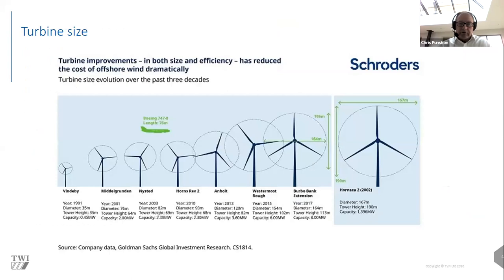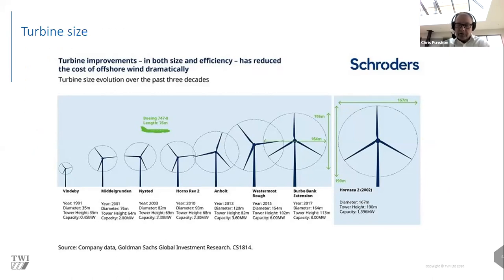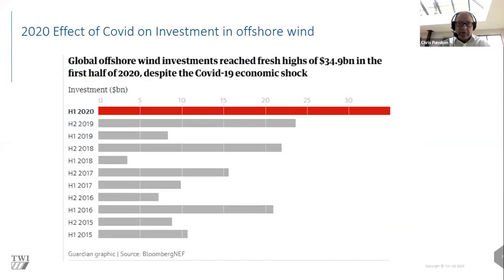The trend in offshore wind turbine size from 1991 to the current day shows a massive increase in rotor size over three decades. Because it's an r-squared relationship, there's a huge amount of power being generated by a single turbine today. In terms of investment, the effect of COVID has not had a negative impact — there was about £24 billion invested in the first half of 2020 despite the economic shock.